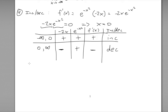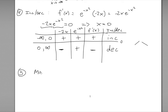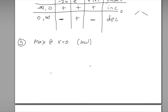For step five, we look for local maxima and minima. At x = 0, the derivative changes from positive to negative, meaning the function goes from increasing to decreasing — this gives a local maximum at x = 0. There are no local minima, since the derivative never changes from negative to positive.